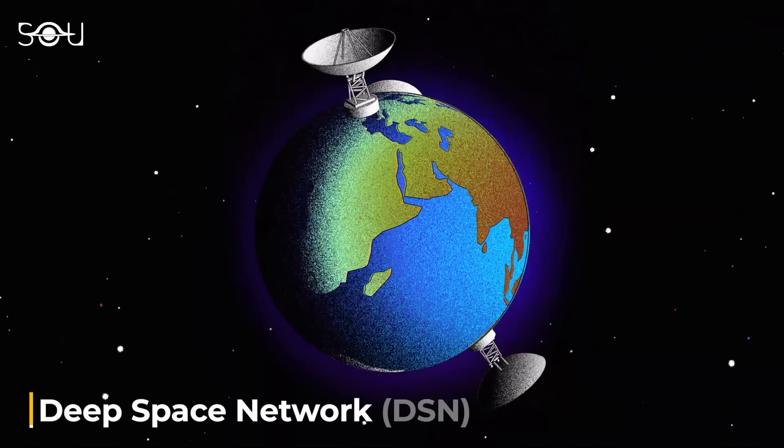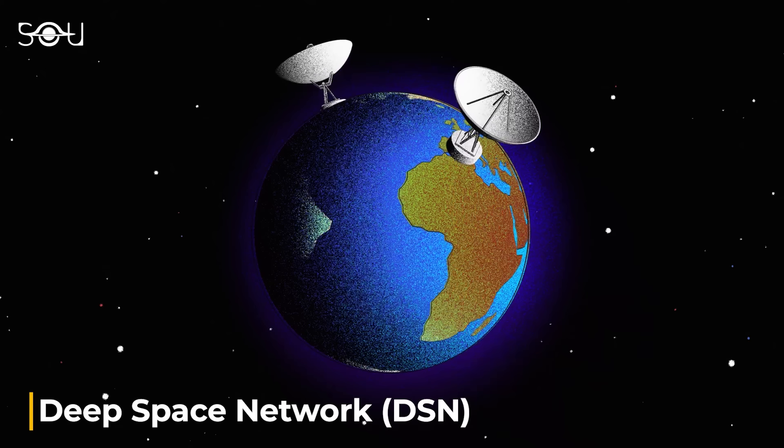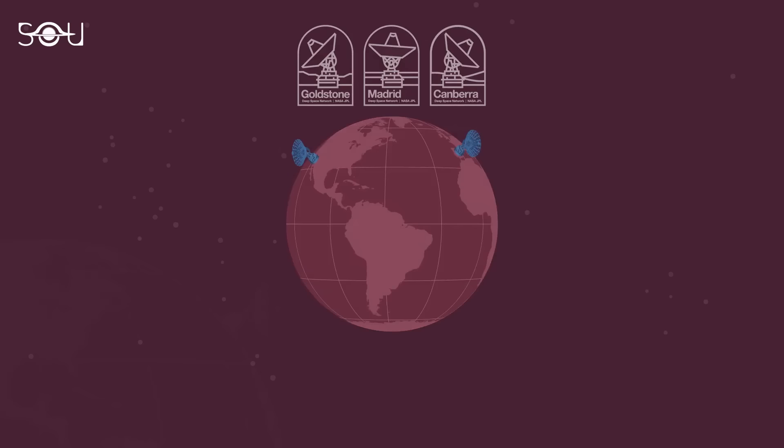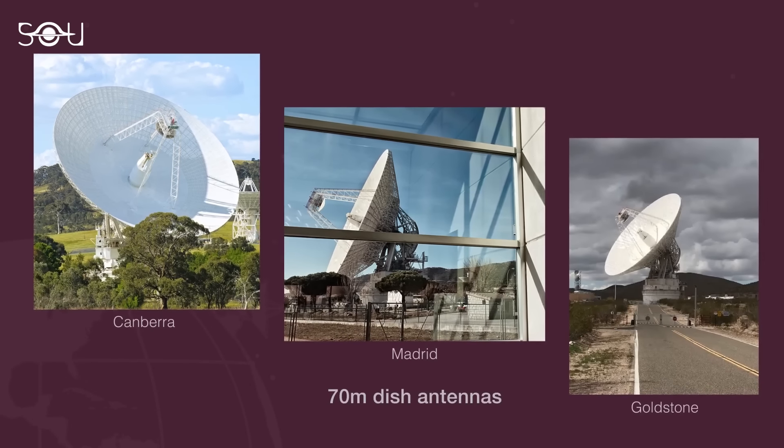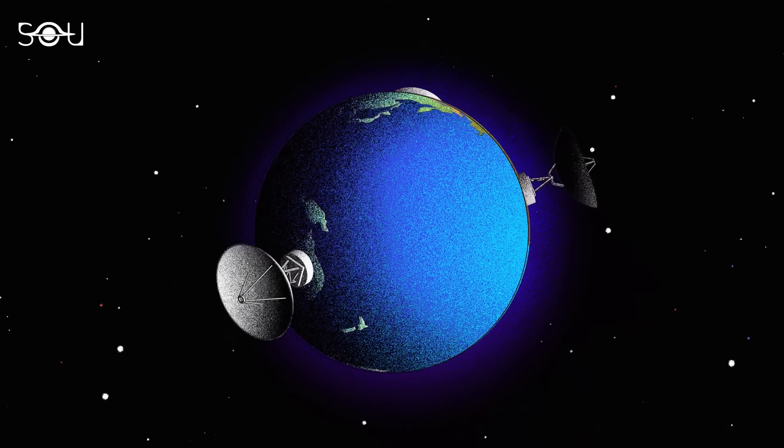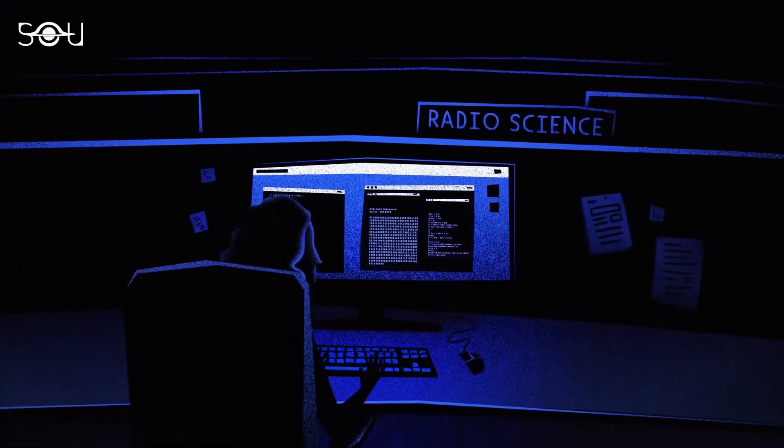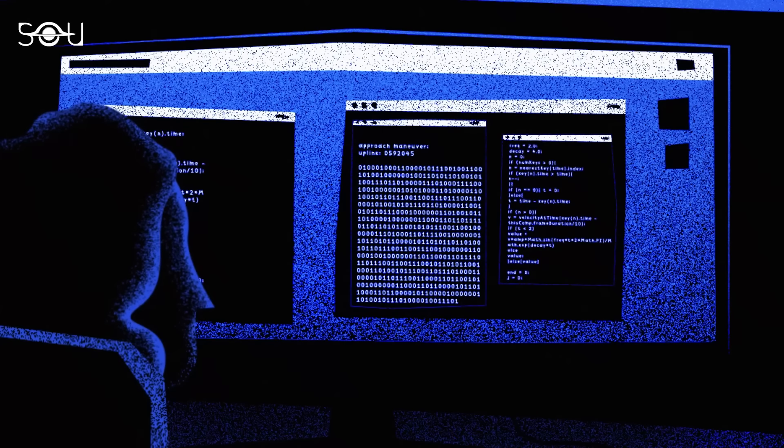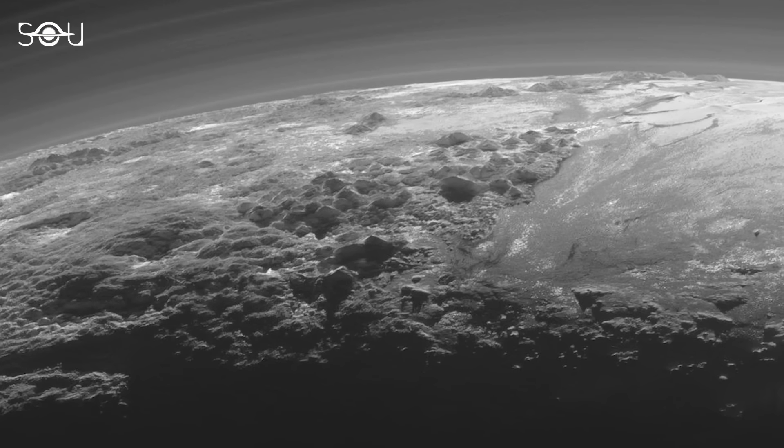The DSN is a collection of large radio antennas strategically placed around the Earth, such as in California, Spain, and Australia, to ensure continuous communication with different spacecraft as the planet rotates. Once the binary data are received, it is further processed in data centers. Finally, the binary data are converted into human-readable formats like numerical values, graphs, or images that are further used for analysis and research.